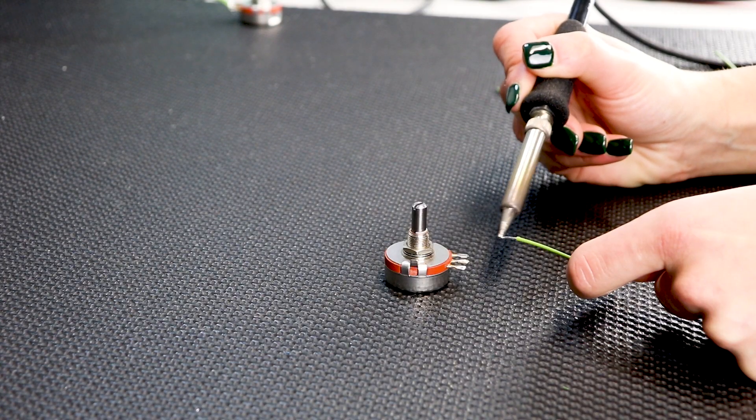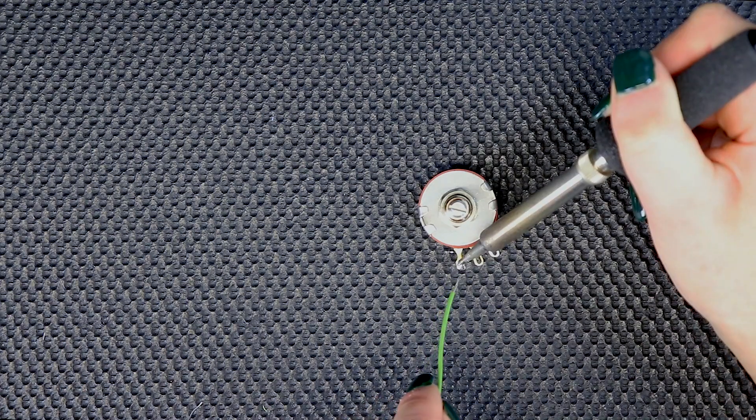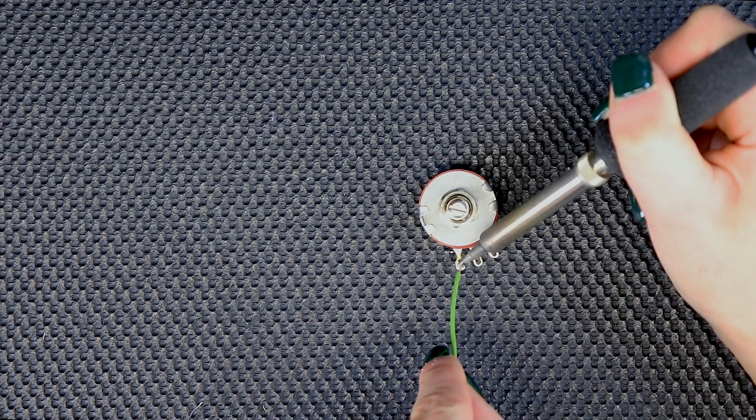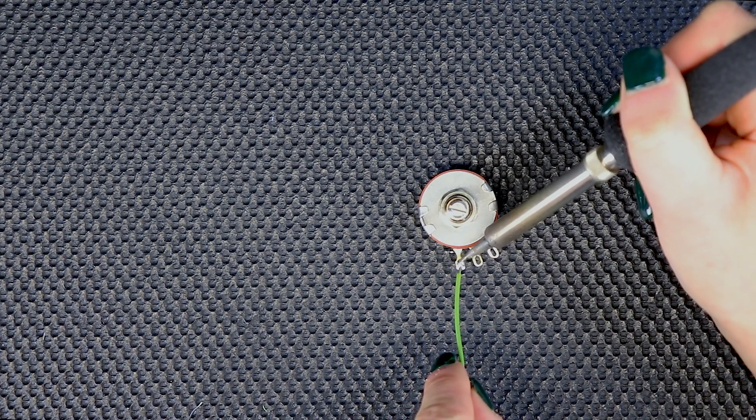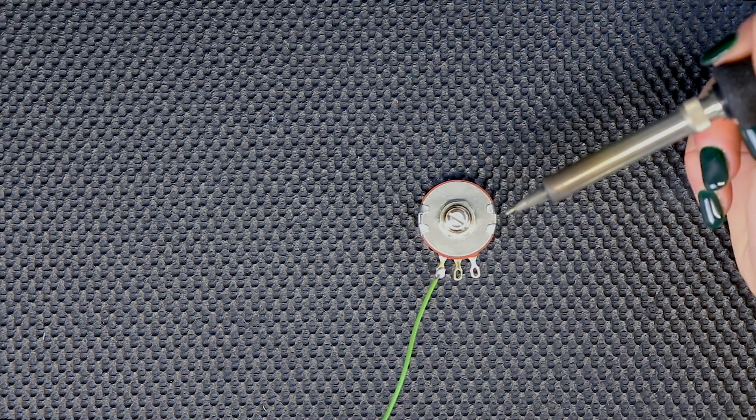Use a soldering iron to solder the first end of the wire to terminal one and solder the other end to the component's chassis. This will ground the pot, which will allow it to be turned all the way to zero when at the minimum position.